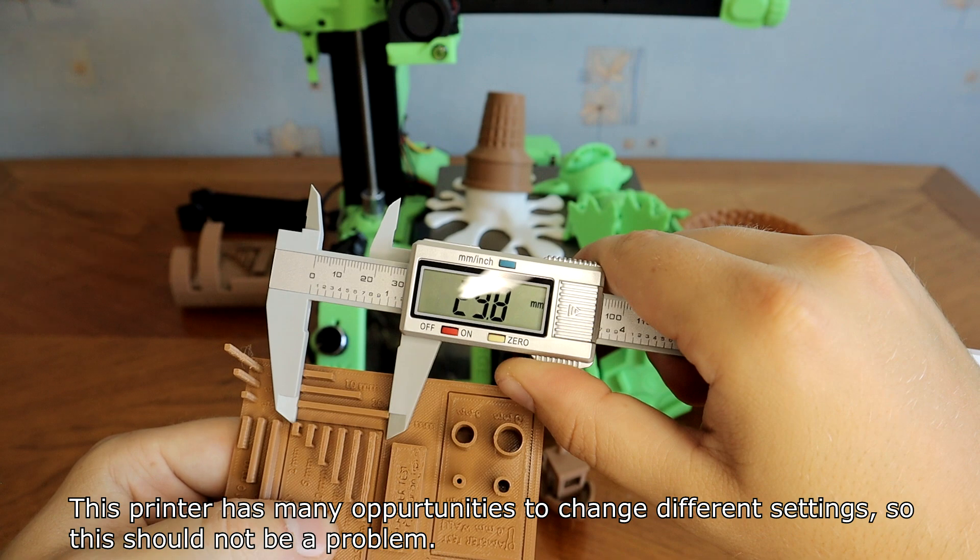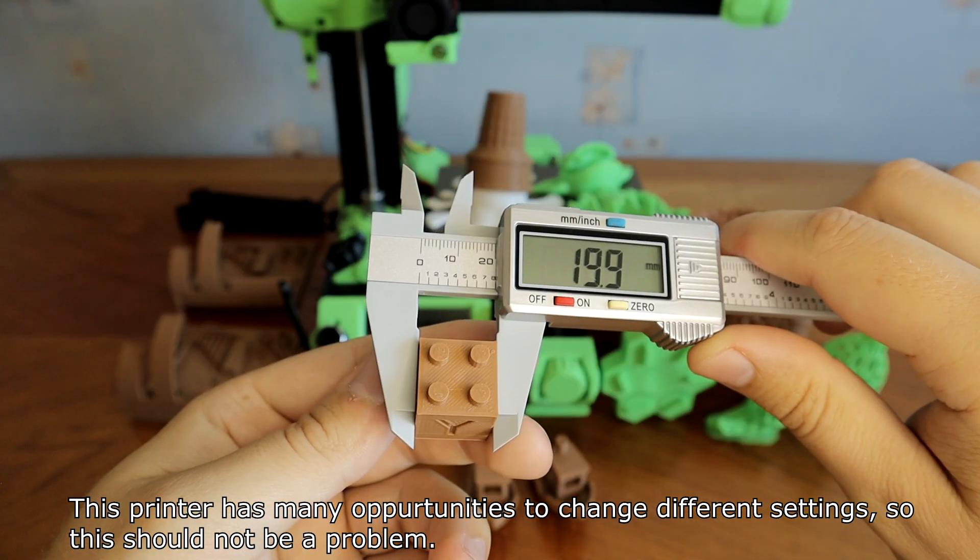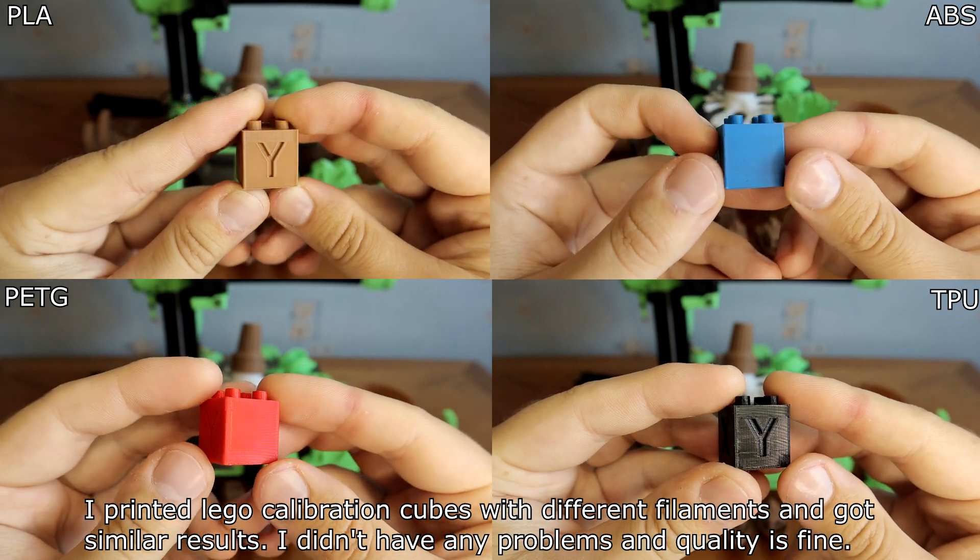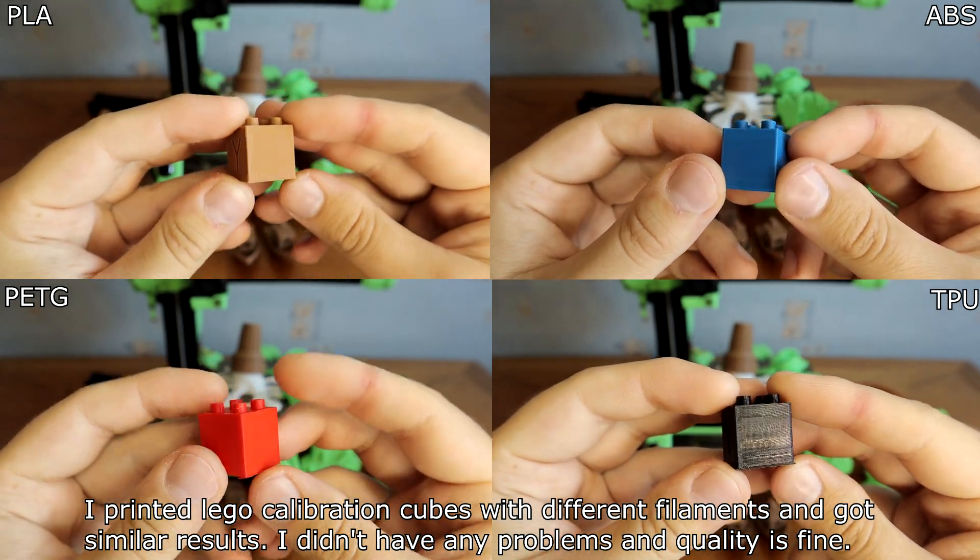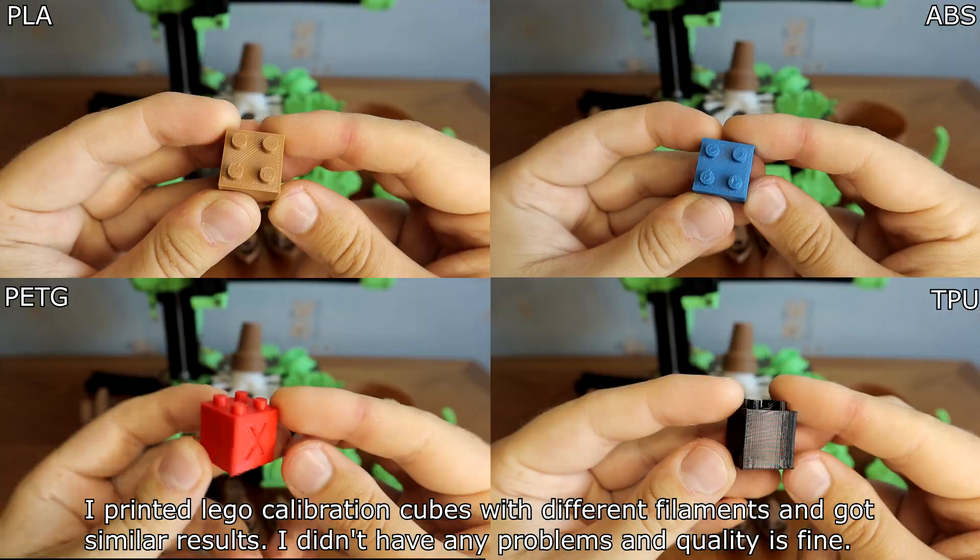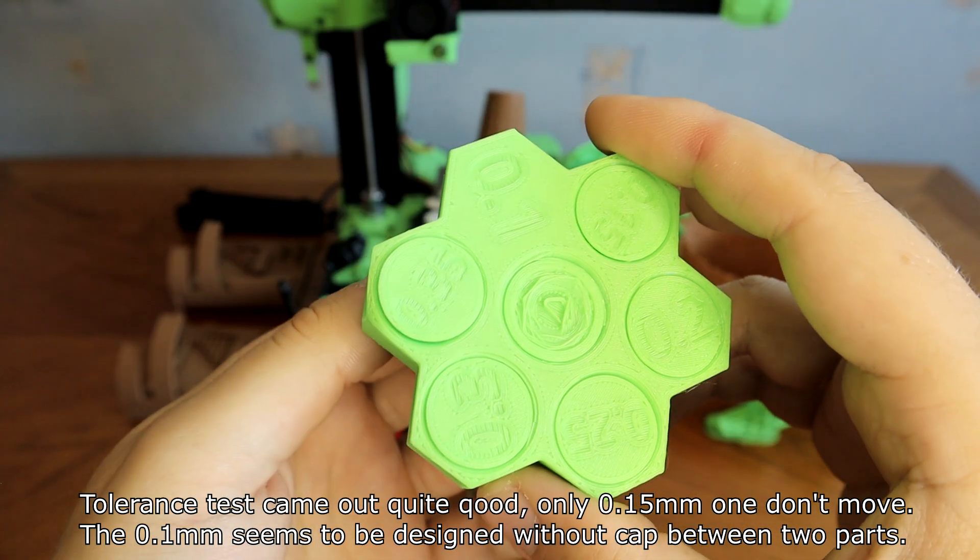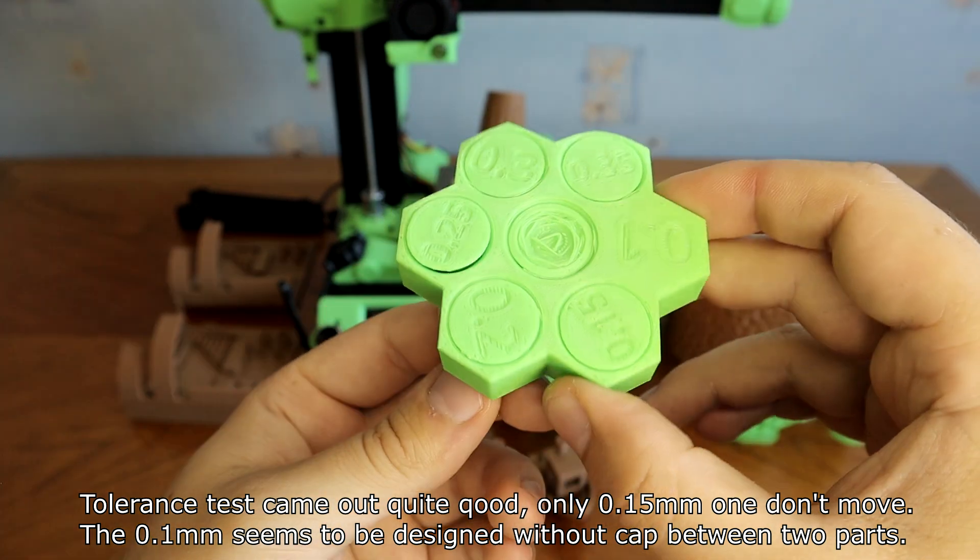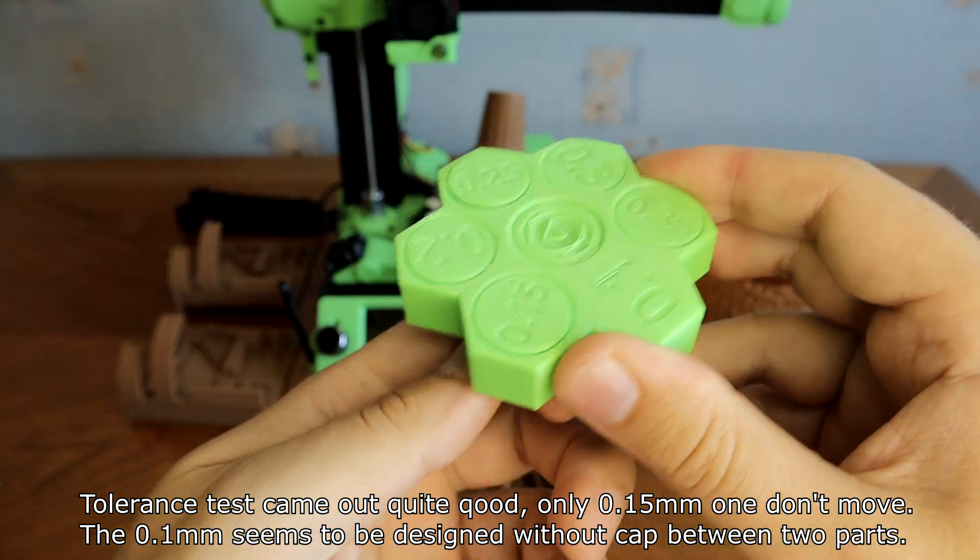This printer has many opportunities to change different settings, so this should not be a problem. I printed Lego calibration cubes with different filaments and I got similar results. I didn't have any problems and quality is fine. Tolerance test came out quite good, only 0.15mm one had to move. The 0.1mm seems to be designed without gap between two parts.